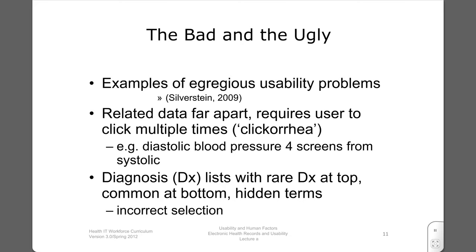We review some examples of egregious usability problems, prepared by Scott Silverstein, an informatician who had to prepare mock screenshots based on real systems because of copyright restrictions. His website contains more examples. Some basic examples are the placement of related data far apart, such as one real system which required the user to find different components of blood pressure — systolic and diastolic — four screens apart.